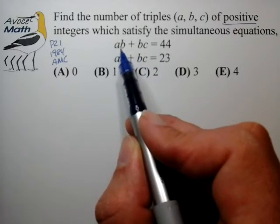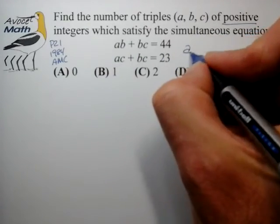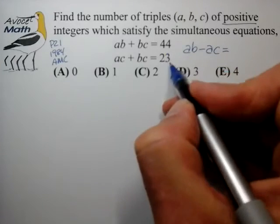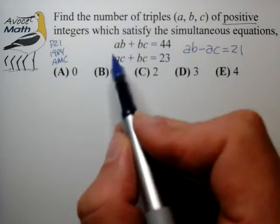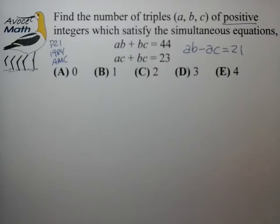So let's go ahead and form that. The top equation minus the bottom equation would give you ab minus ac is equal to 44 minus 23, which is 21. Now each of these three equations can have a factor group decomposition. So let's go ahead and do that.